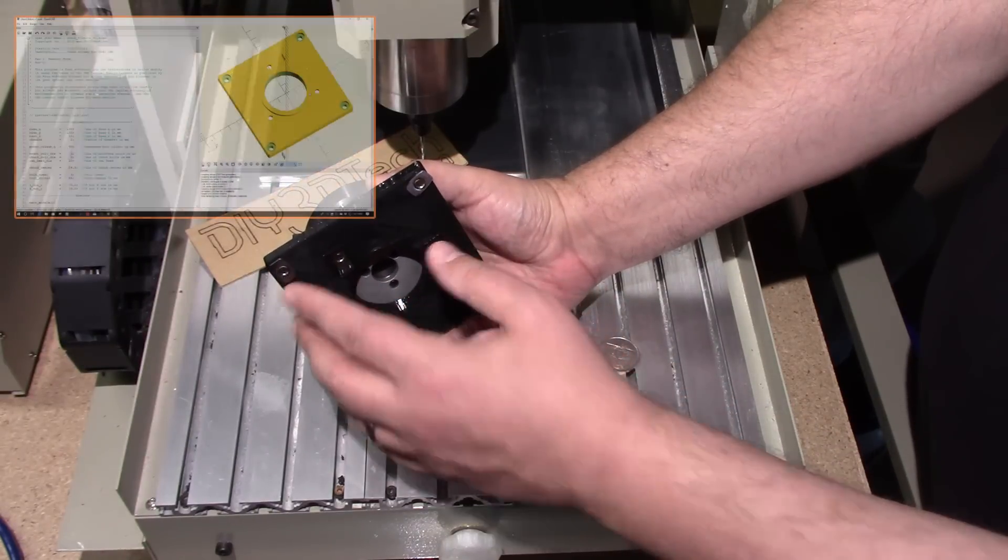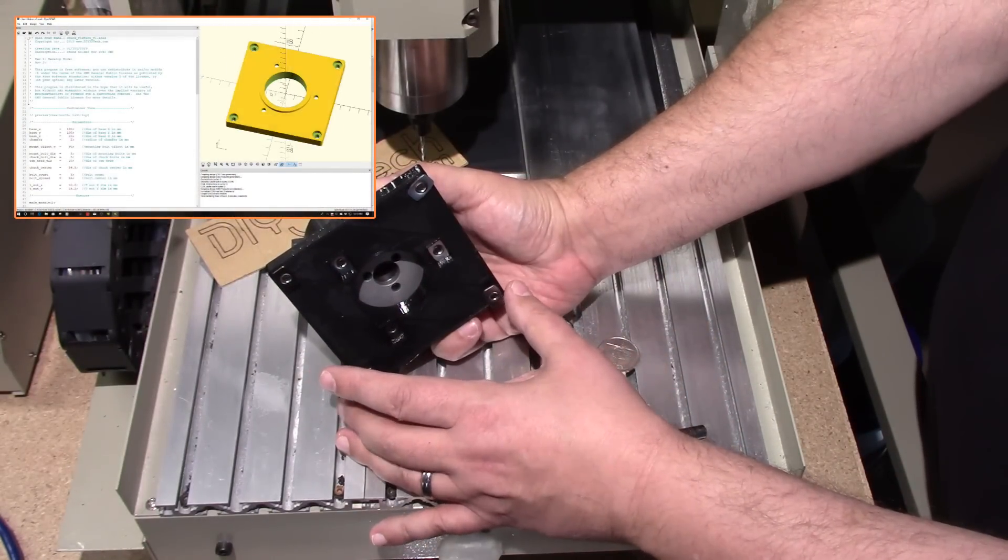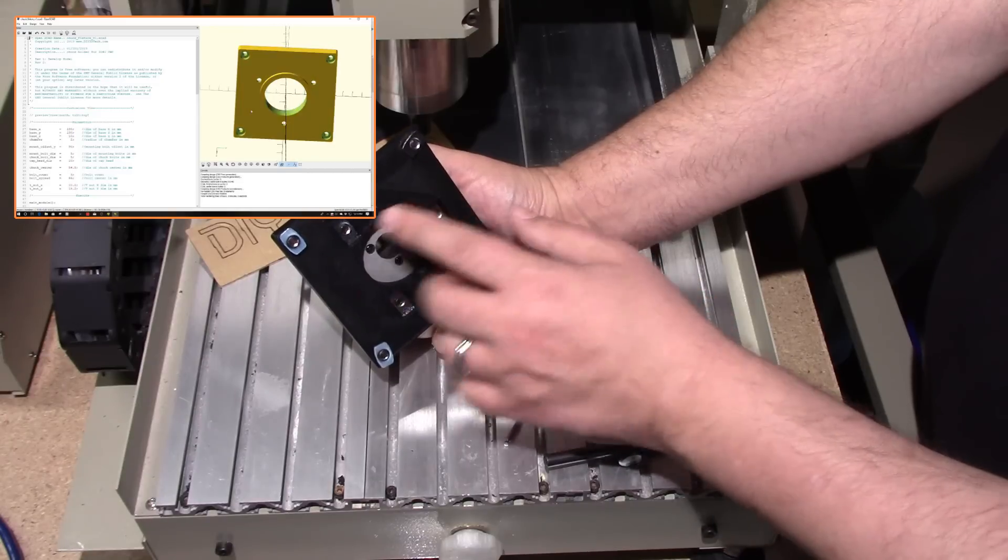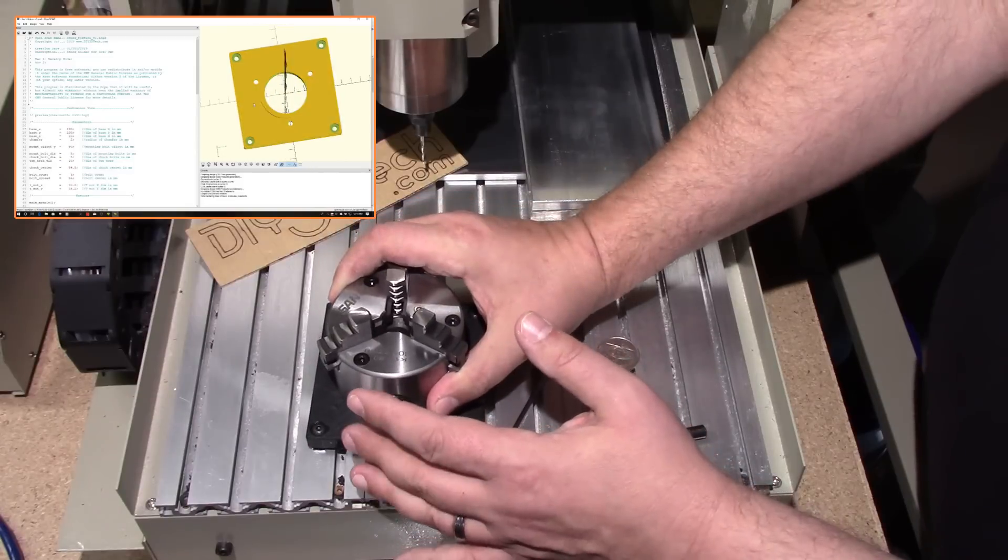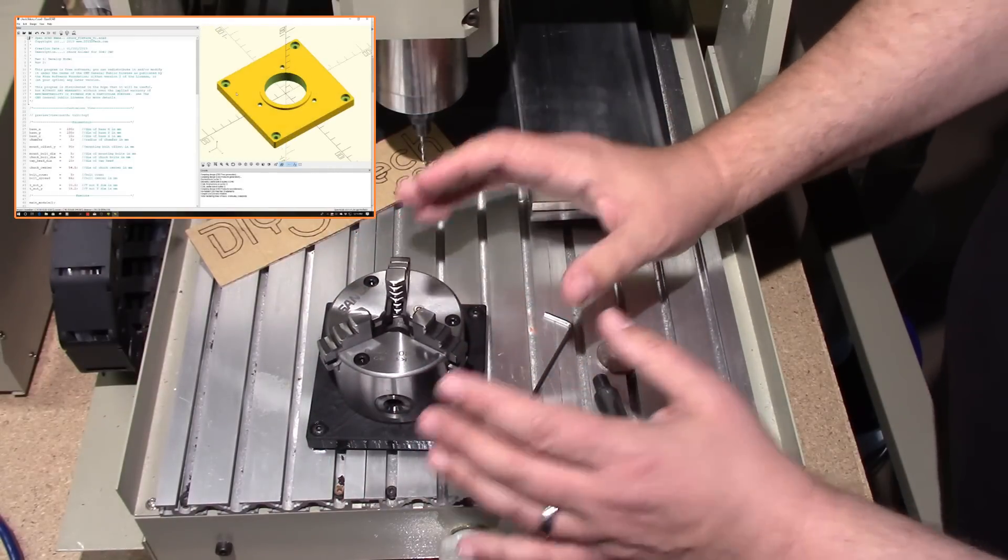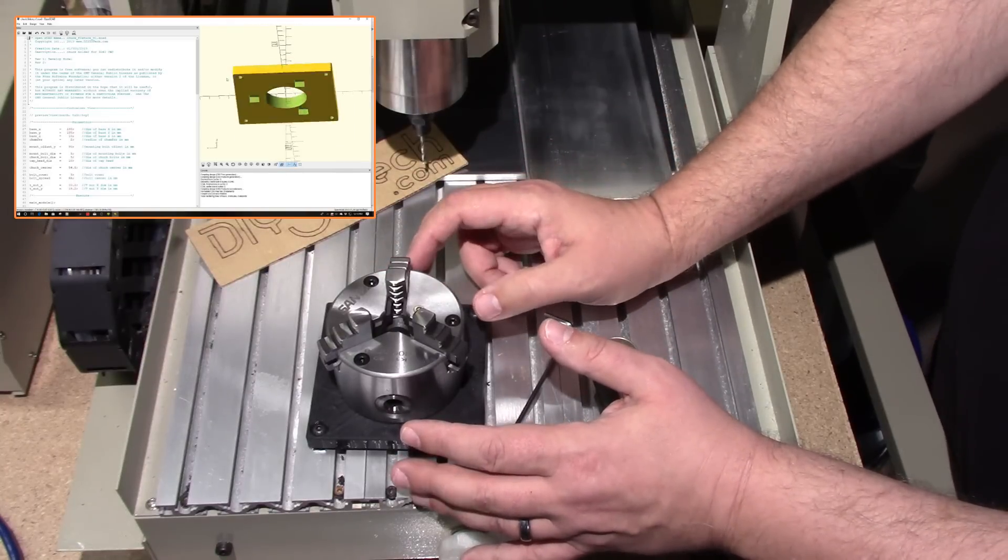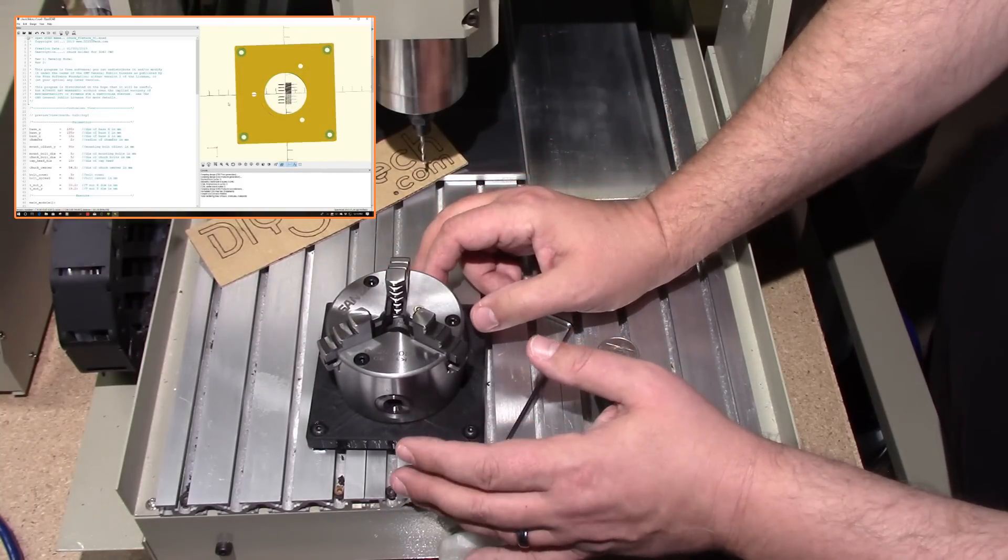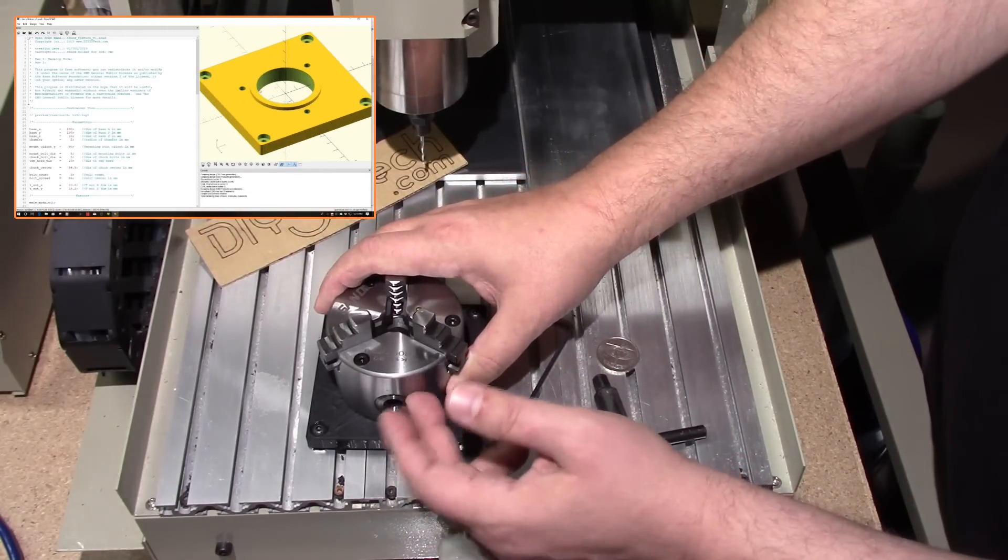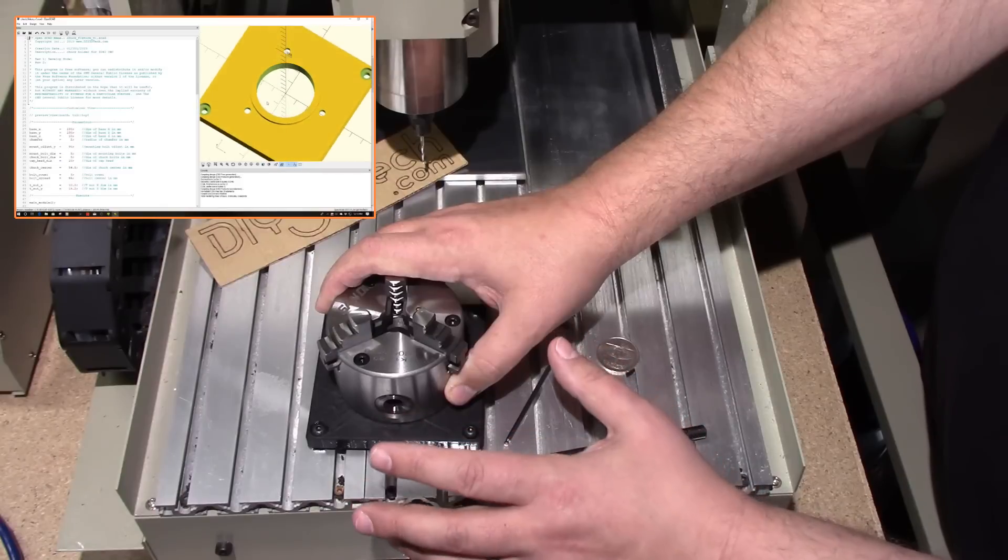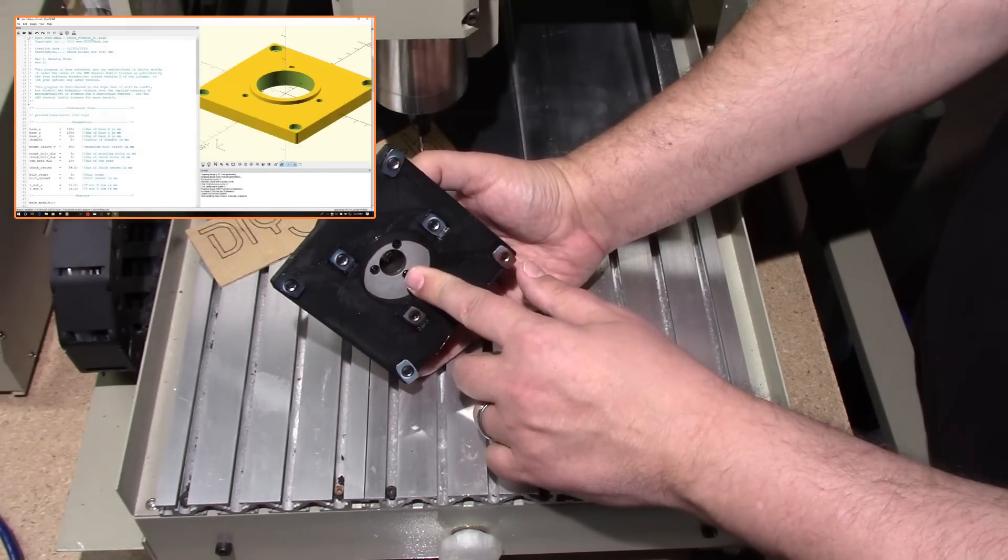And then I also use the T-nuts which fit very nicely in here to attach the chuck to the base. Now I designed this in OpenSCAD, and up in the corner I'll be showing some OpenSCAD shots of this because I also put a recessed ring that receives into the back of the chuck to keep it straight and also provides extra rigidity and also saves all the plastic for this space here because, you know, why print that out?